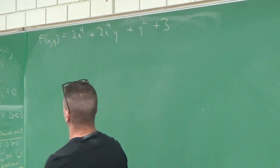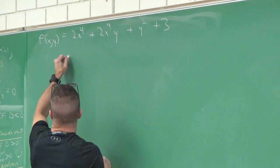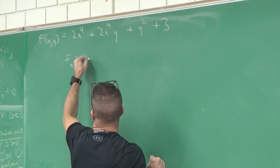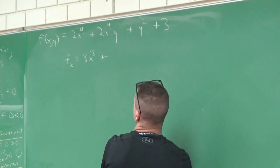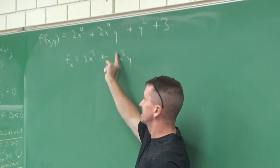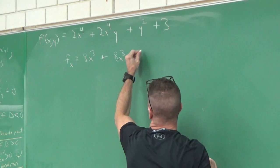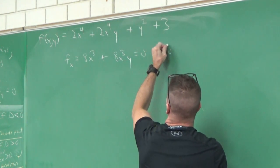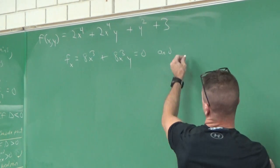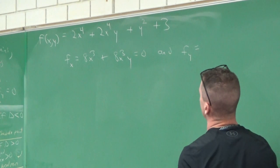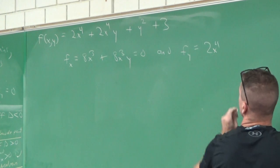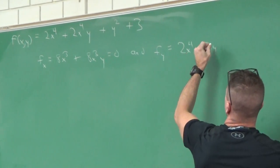Step one: let's find the critical points. Let's set fx equal to zero. What's fx? 8x^3 + 8x^3y. And fy equals zero. What's fy? 2x^4 + 2y equals zero.